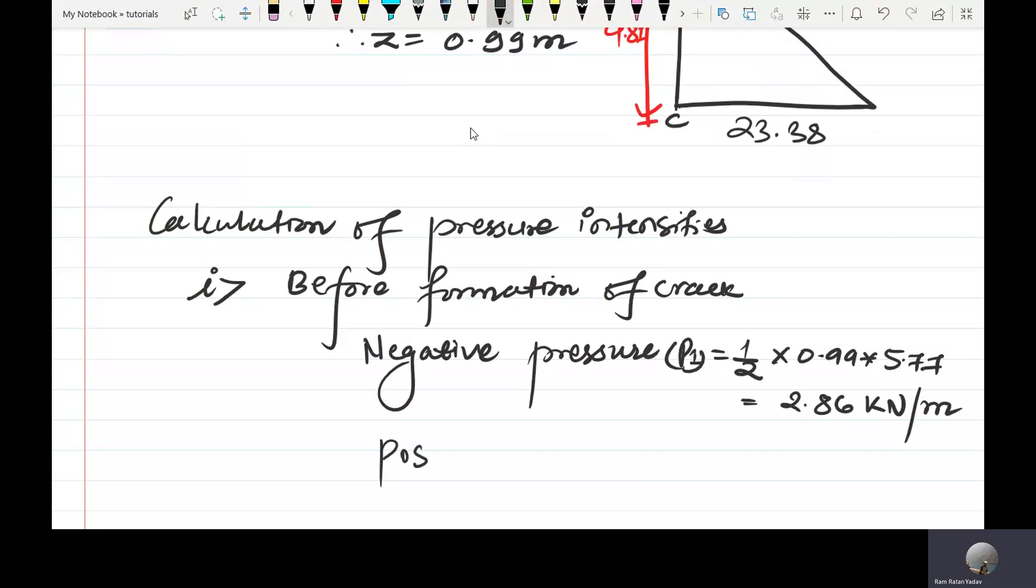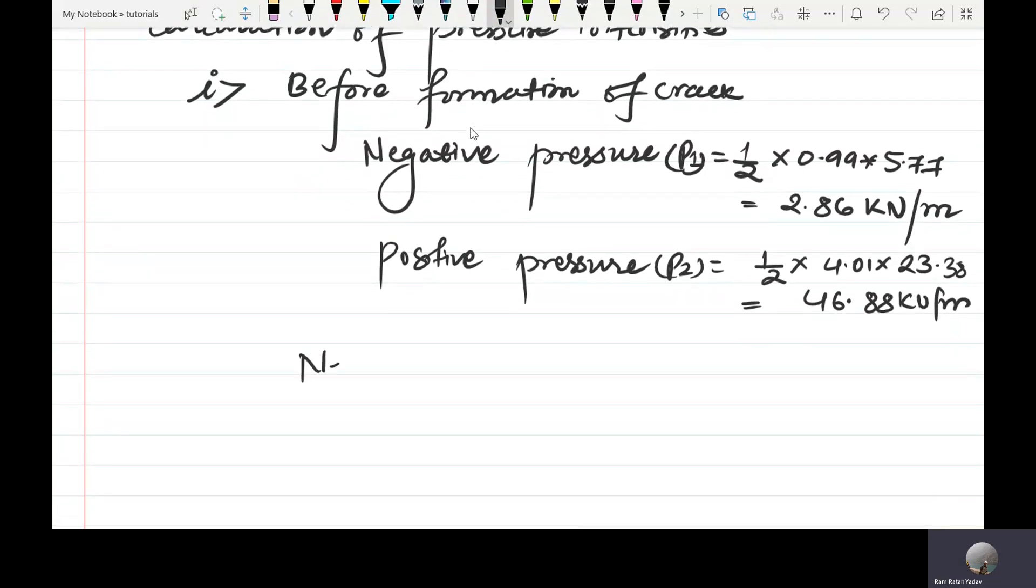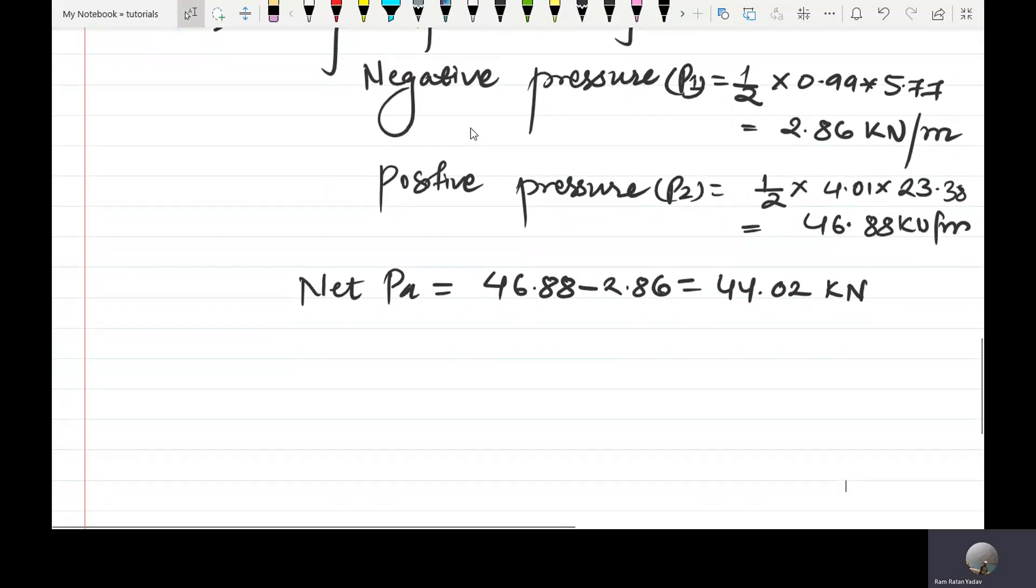The positive pressure: half times 4.01 times 23.83 equals 46.88 kilonewton per meter.